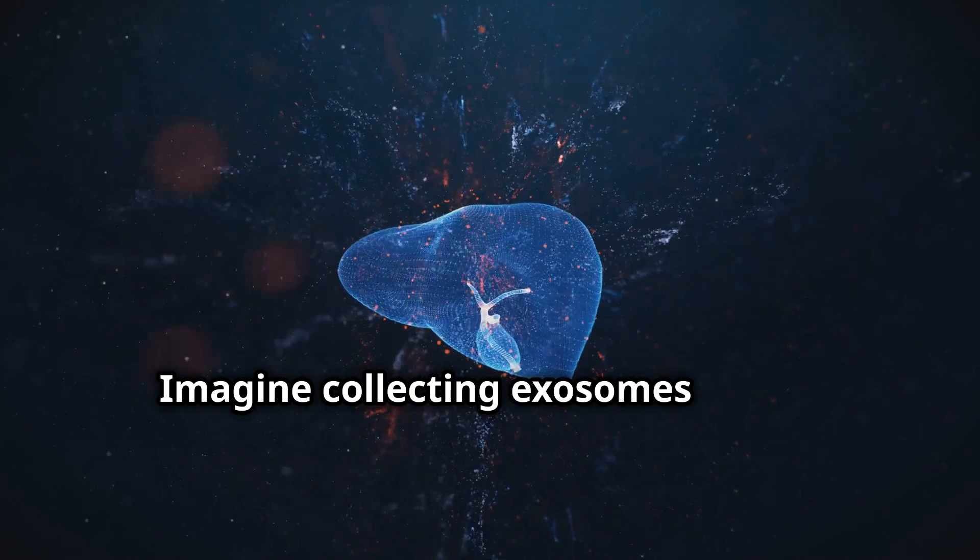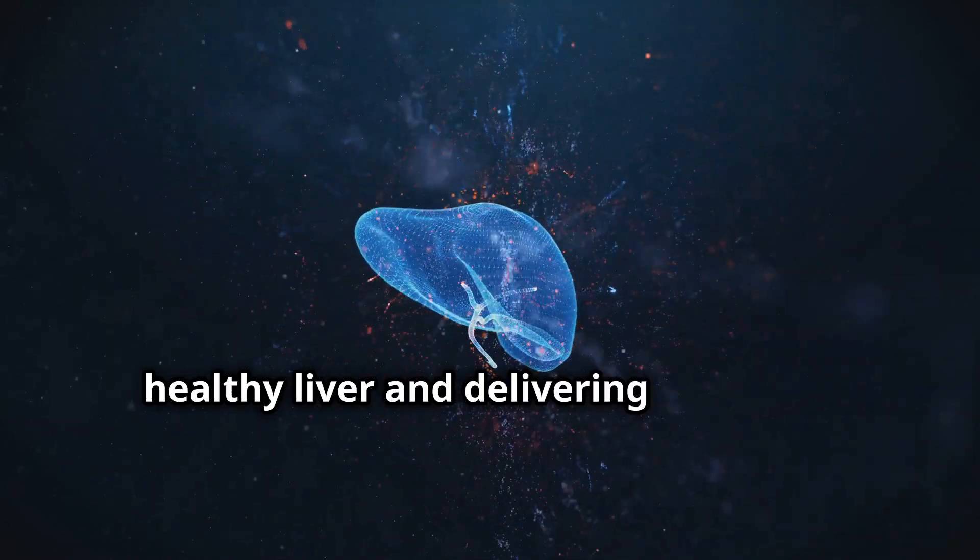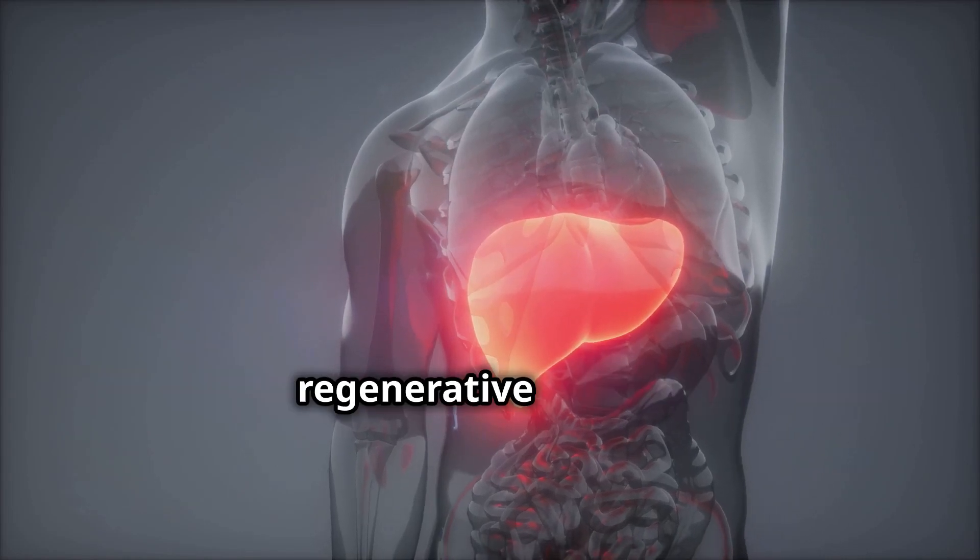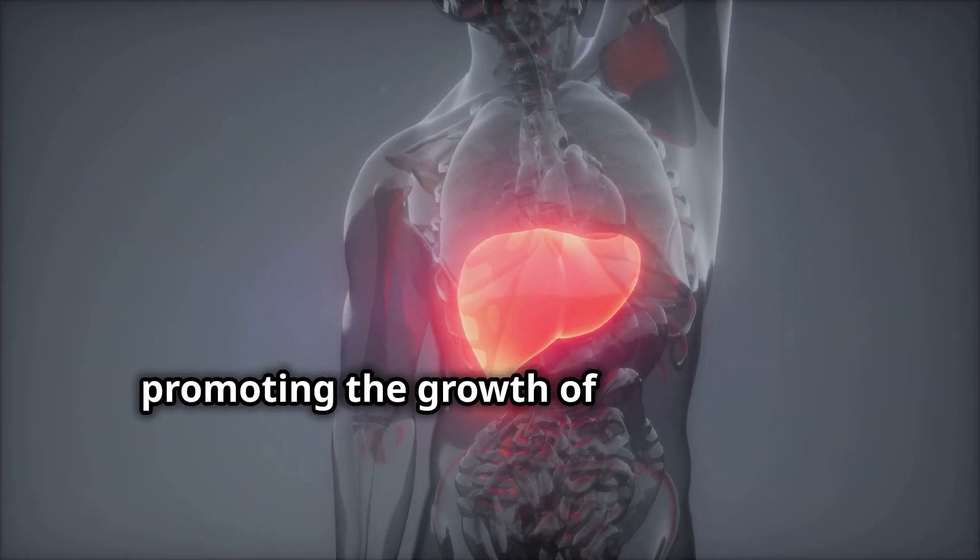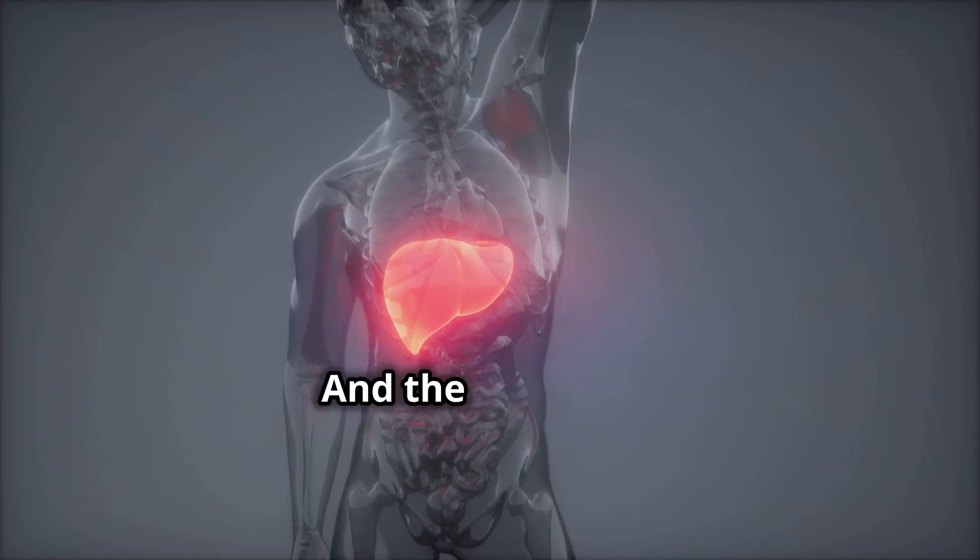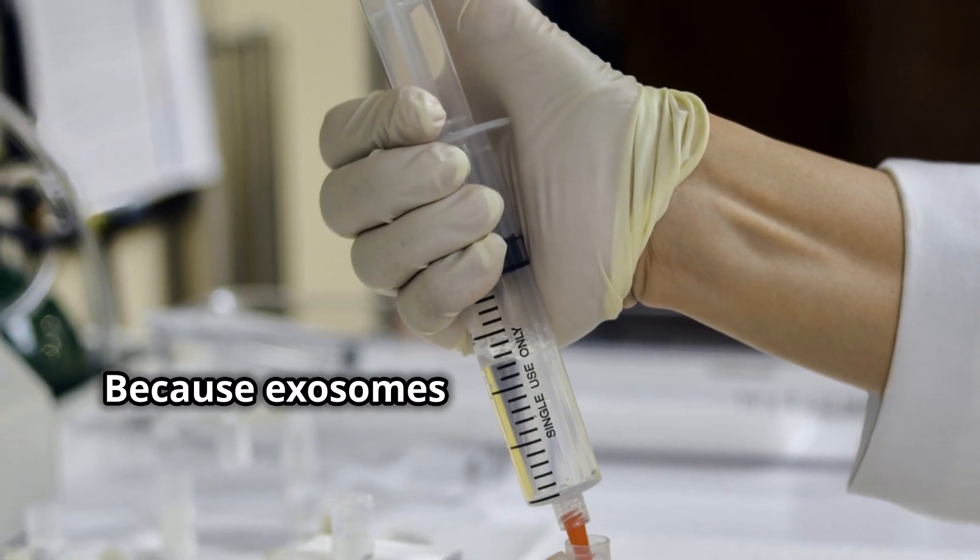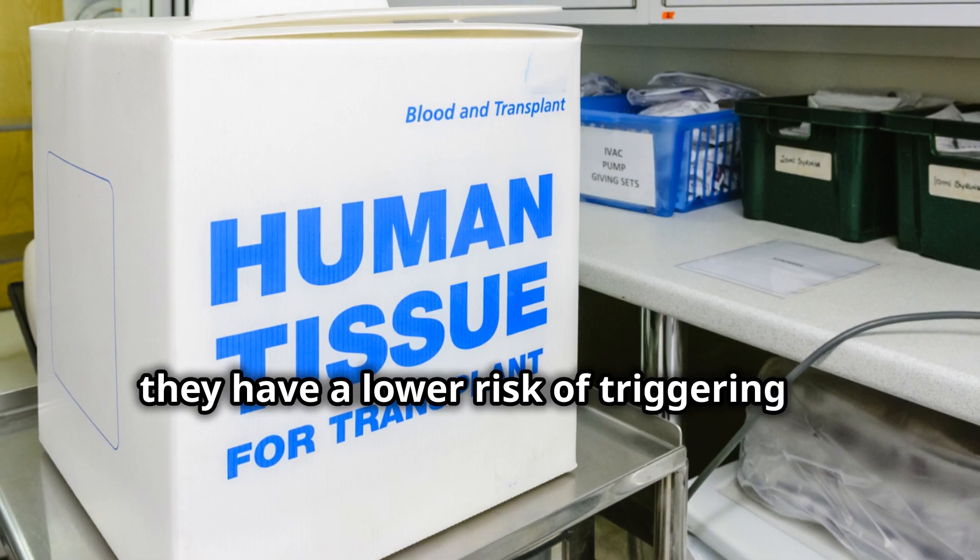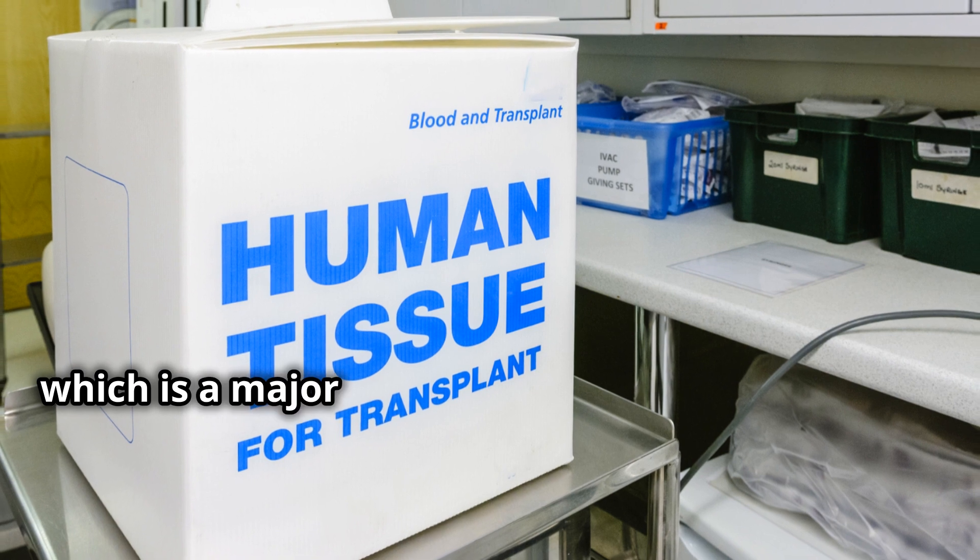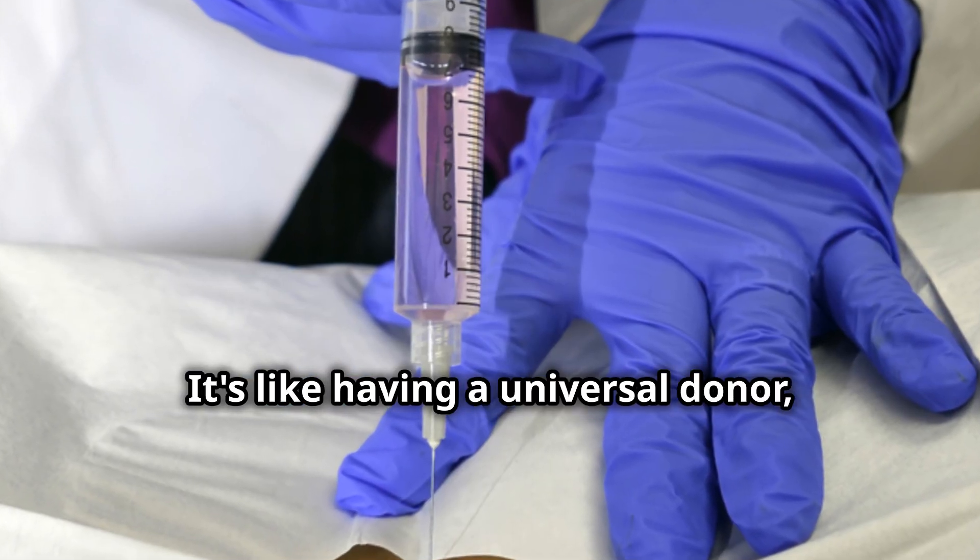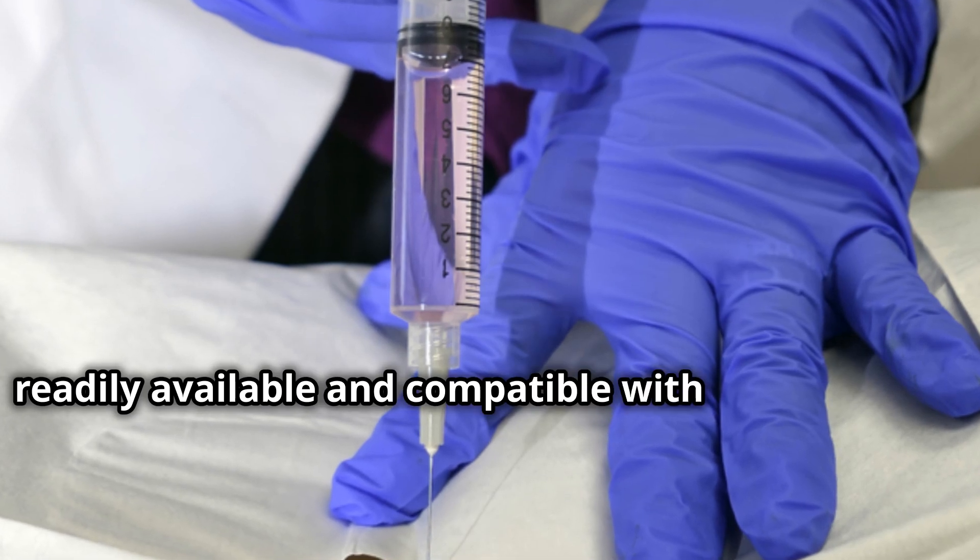Imagine collecting exosomes from a healthy liver and delivering them to a patient with liver disease. These exosomes could potentially deliver regenerative signals, promoting the growth of healthy liver tissue and restoring function to the damaged organ. And the best part? Because exosomes are naturally produced by the body, they have a lower risk of triggering an immune response, which is a major hurdle in organ transplantation. It's like having a universal donor, readily available and compatible with any recipient.